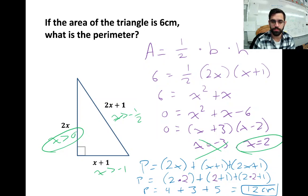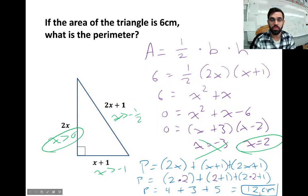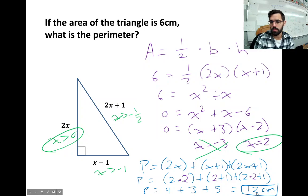We have a domain restriction, so we eliminate one solution. We take that x and plug it in to calculate the perimeter. Note there's a typo — the area should be 6 cm² (square centimeters). Since the area is given in square centimeters, we know the unit of measure for the perimeter is centimeters. The answer is 12 centimeters.